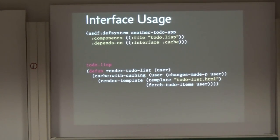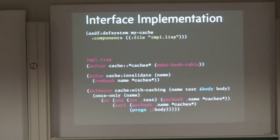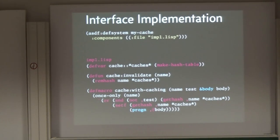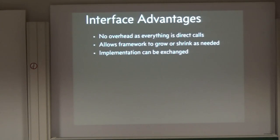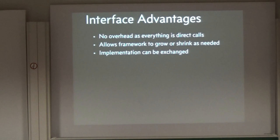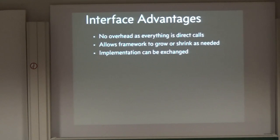At that point there's no code yet, so you also need an implementation, but you can write that separately. You do that by taking the functions and symbols defined by the interface and overwriting them. By using this overwriting mechanism, you can write the actual functionality directly into the interface without any interaction layer that would slow things down. There is no overhead because everything is direct calls — you can use macros, functions, and classes. This allows the framework to grow or shrink as needed because only the features that are actually provided are available. The administrator can decide which implementation to use, whether they care more about features or being minimal.